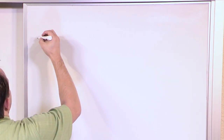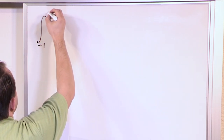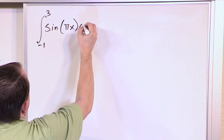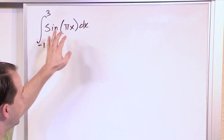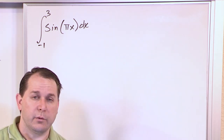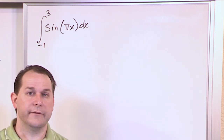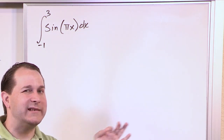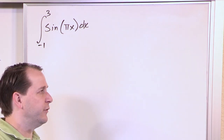Let's do one with limits. The integral from negative 1 to 3 of sine of pi x, dx. You might be tempted to write the answer down because you know the integral of sine — but this is sine of pi times x, not sine of x. So you cannot just write down the answer without doing a substitution.